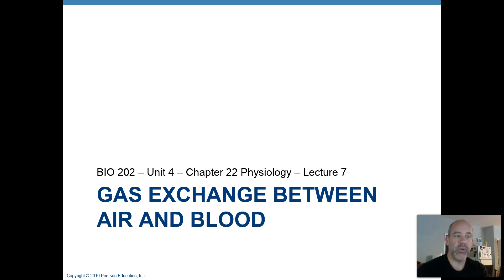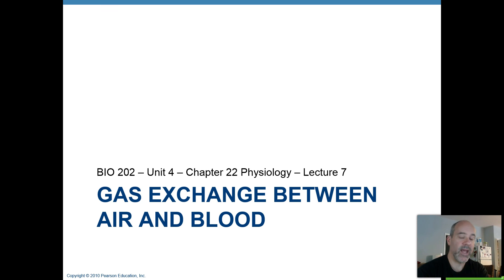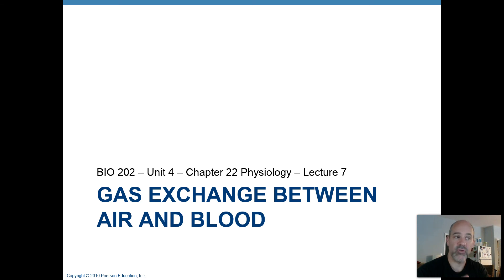Lecture number seven for the respiratory system will cover more about the gas exchange process. Recall the four major processes of respiration: ventilation (covered so far), external respiration (gas exchange between air and blood), internal respiration (gas exchange between blood and interstitial tissue fluids surrounding cells), and transport (covered in the cardiovascular system). The next major topic moving through chapter 22 will be internal and external respiration.